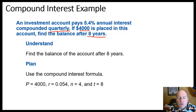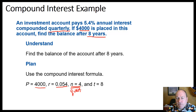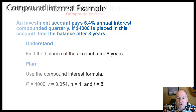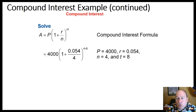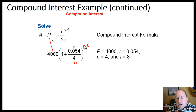Using the compound interest formula: P is $4,000, the rate r is 5.4% written as 0.054, n is 4 because this is quarterly — four compounding periods per year — and t is 8 years. Substituting: A equals 4,000 times (1 plus 0.054 divided by 4) raised to the power of 4 times 8. That's 4,000 times (1 plus 0.054/4) to the 32nd power, since we compound four times a year for eight years, giving 32 total compounding periods.